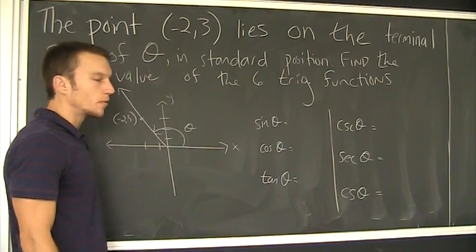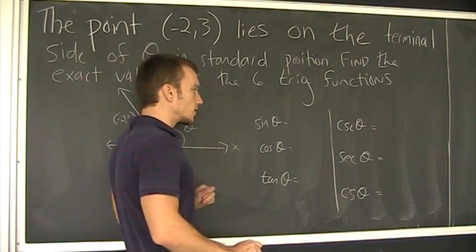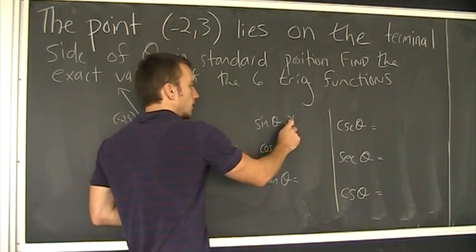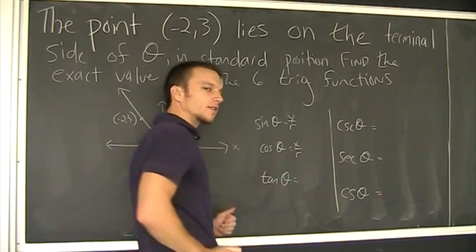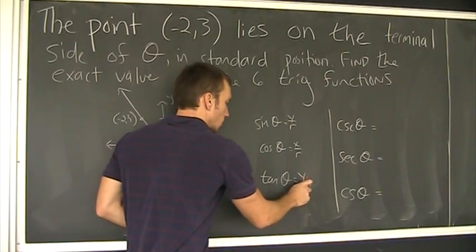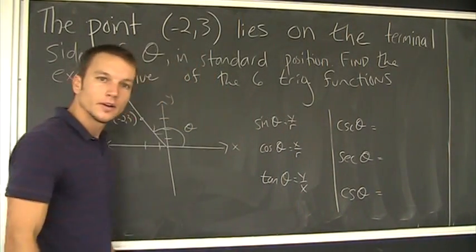Right? So, we have definitions for these. Right? The sine of theta is defined, in the xy plane as y over r. The cosine of theta is defined as x over r, and the tangent, of course, is y over x.